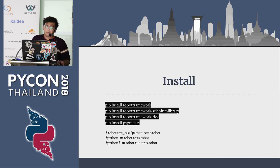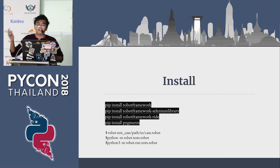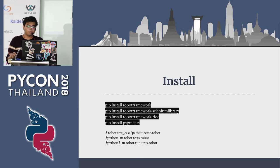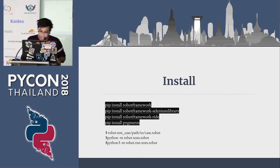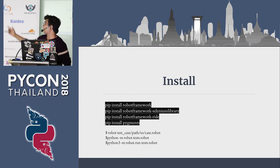Back then we didn't have the 'robot' command, so you'd say 'python -m robot test.robot', which would look at the keywords and compile them into the Python version to be run by Python. For Python 3, it's essentially the same thing.